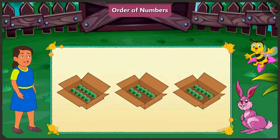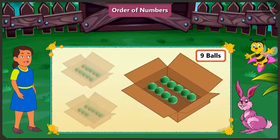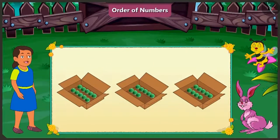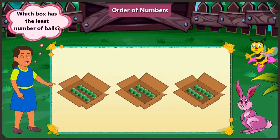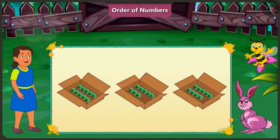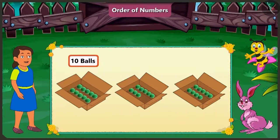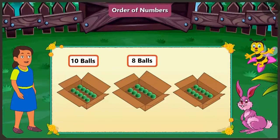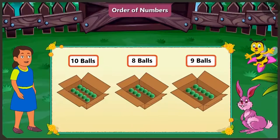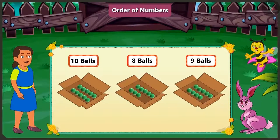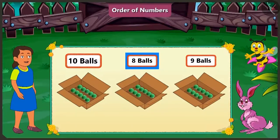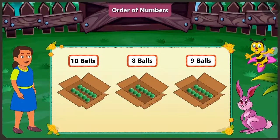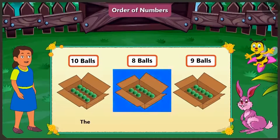I will keep a third box here. It has nine balls. Now tell me, out of the three given boxes, which one has the least number of balls? The first box has ten balls, the second has eight balls, and the third box has nine balls. While counting from one to ten, eight comes before nine and ten. We can see that the smallest number here is eight. That is why the second box has the least number of balls.